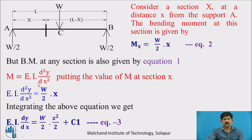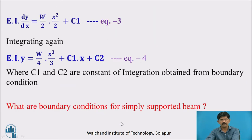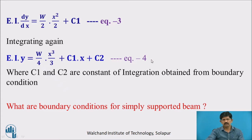From equation 1, M = EI·d²y/dx². Substituting the value of M, we get EI·d²y/dx² = (W/2)·x. Integrating this equation, we get EI·dy/dx = (W/2)·(x²/2) + C1, where C1 is a constant of integration — this is equation 3. Integrating again, we get EI·y = (W/4)·(x³/3) + C1·x + C2 — this is equation 4. C1 and C2 are constants of integration obtained from boundary conditions.